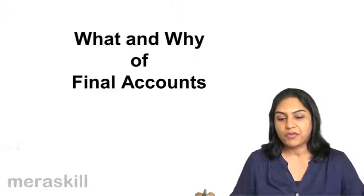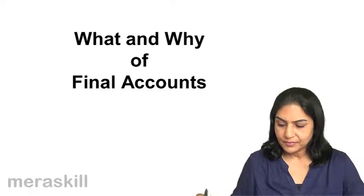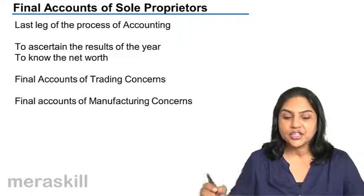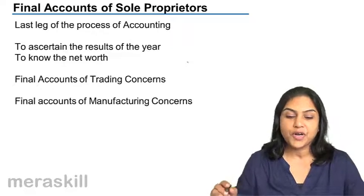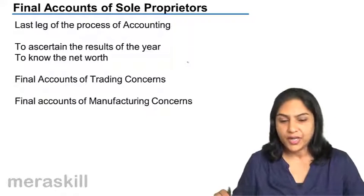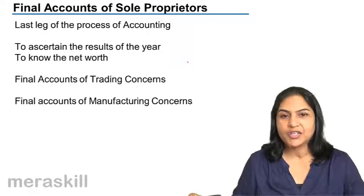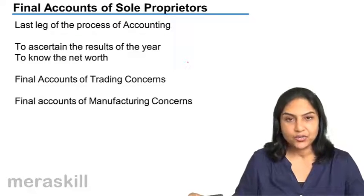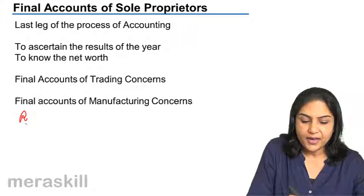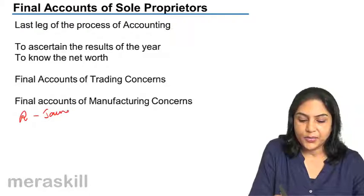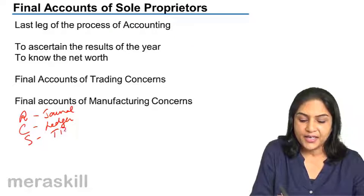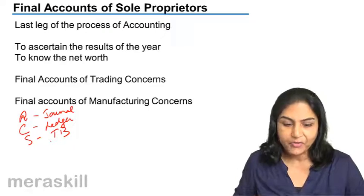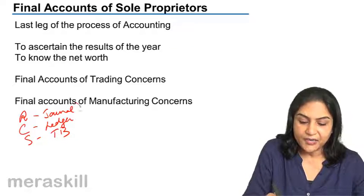What and why of final accounts? The final accounts are actually the last leg of the process of accounting. The process of accounting — if you remember the definition — was the art of recording, classifying, and summarizing. We did the recording in the journal, classifying in the ledger, and summarizing in the trial balance. This activity was called bookkeeping.